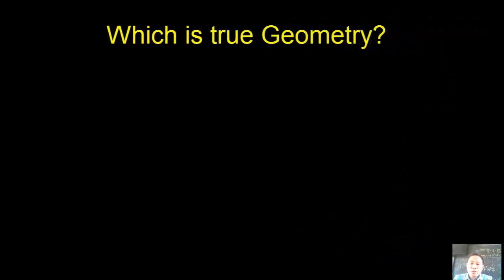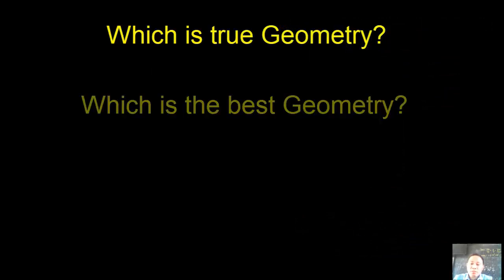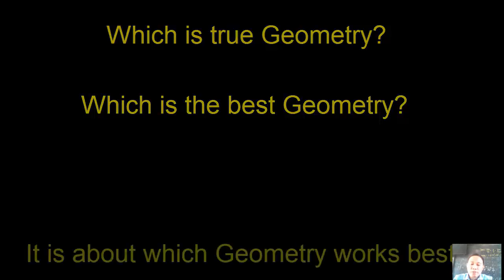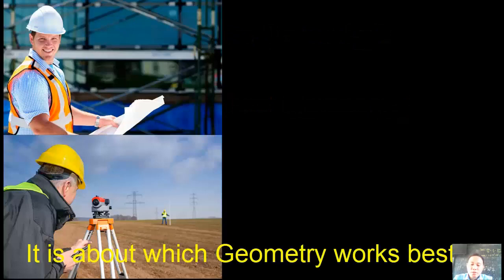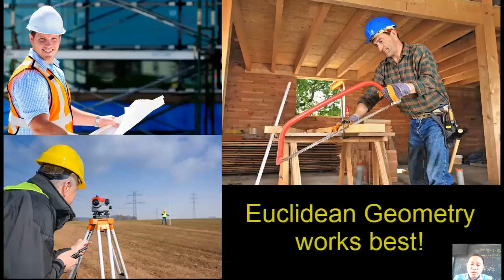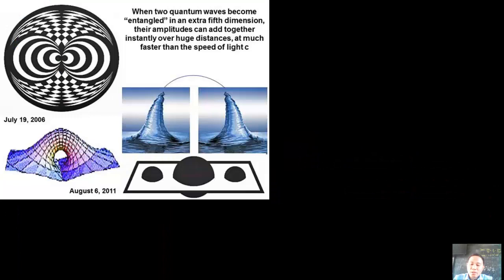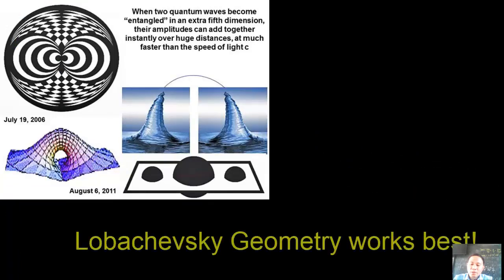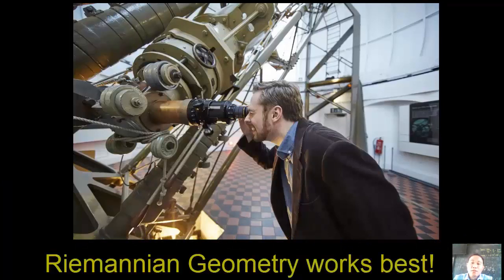Now the question is, what is true geometry? What is the best geometry? It is not about what is true and what is the best geometry. It is about what geometry works best. So if you're a builder or a surveyor or a carpenter, you are going to use Euclidean geometry. And if you are a theoretical physicist, then you can use Lobachevsky geometry. And if you are an astronomer studying these galaxies, then you can use Riemannian geometry.